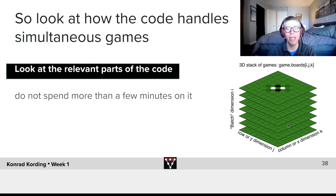So let's look at how the code handles simultaneous games. We'll look at the different parts of the code. We effectively have a 3D stack, where we have lots of bots, we have the positions on the board... No, hold on. We have jk, the positions on the board, and i, the index of the game that we are talking about.